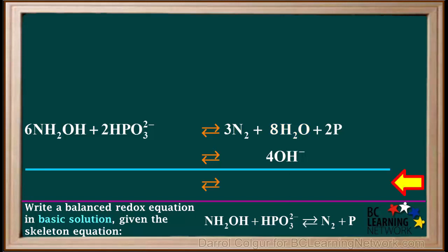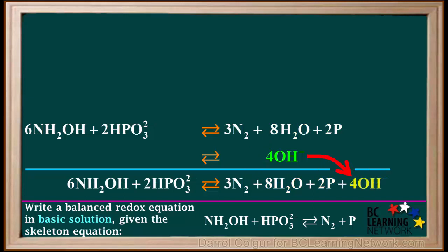What we do now is add up what we have remaining to build the redox equation in basic solution. On the left side we have 6NH2OH and 2HPO3 2-. And on the right side we have 3N2, 8H2O, 2P, and from the bottom right, 4OH minus.